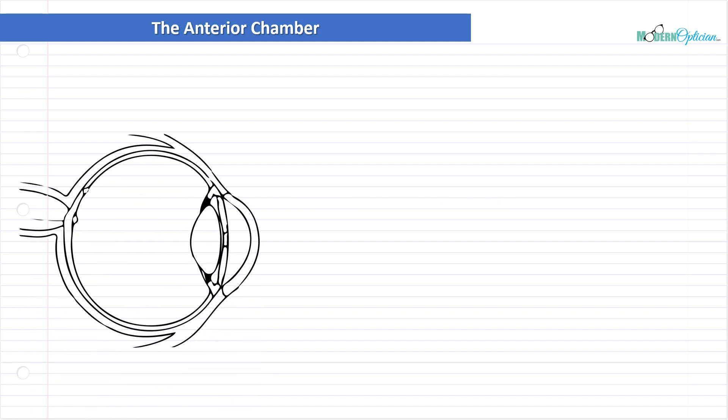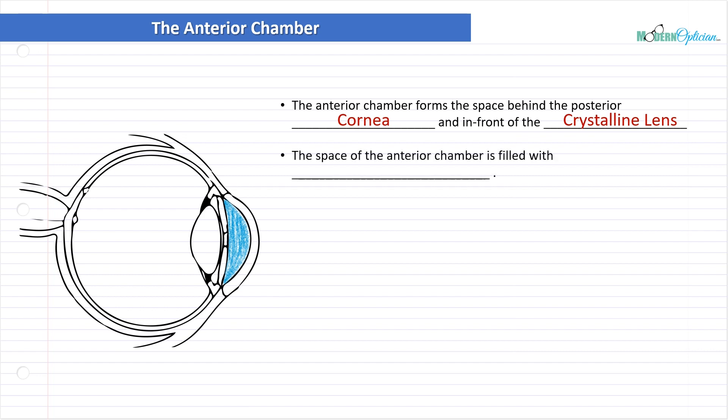Let's talk about the anterior chamber. We're probably getting used to seeing the cross-section of the eye. The anterior chamber is that area right there where we've highlighted in blue. The anterior chamber forms the space behind the posterior cornea and in front of the crystalline lens and iris.